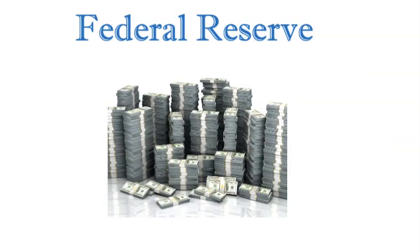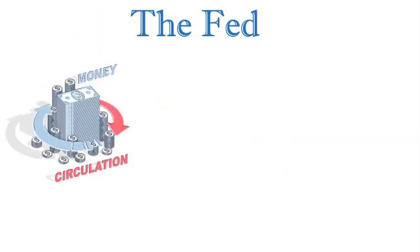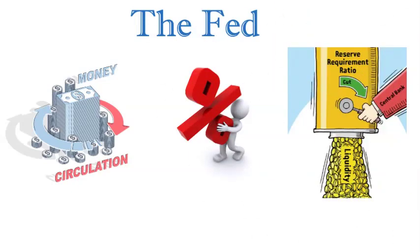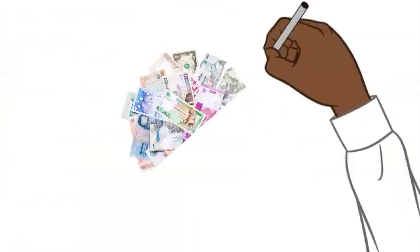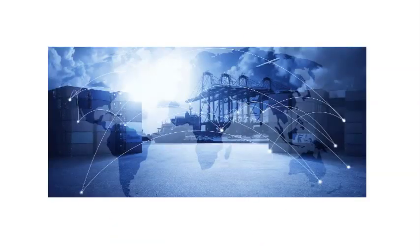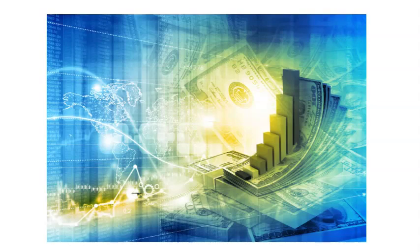The supply of money is managed by central banks and monetary authorities. Here in the US, we have the Federal Reserve, also known as the Fed. They regulate money's creation and circulation in our economy. They use tools such as interest rates and reserve requirements to influence the money supply. Money is a fundamental component of the modern economy — it facilitates trade, promotes economic growth, and provides a framework for measuring and storing value.